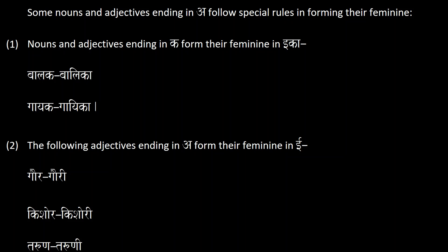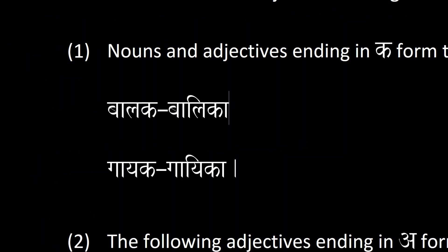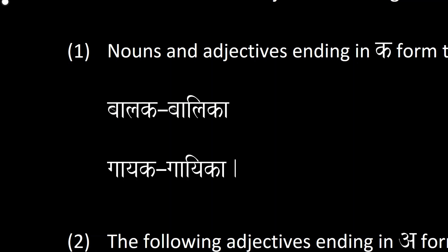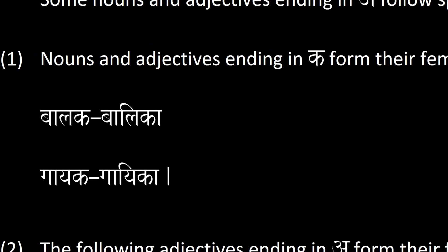In this video we will see that some nouns and adjectives ending in 'a' follow special rules in forming their feminine. For example, nouns and adjectives ending in 'ka' form their feminine in 'ikā'. For example, bālakaḥ is boy but bālikāḥ is girl.